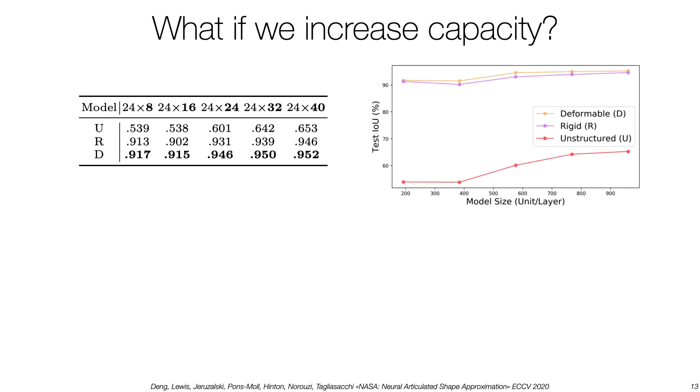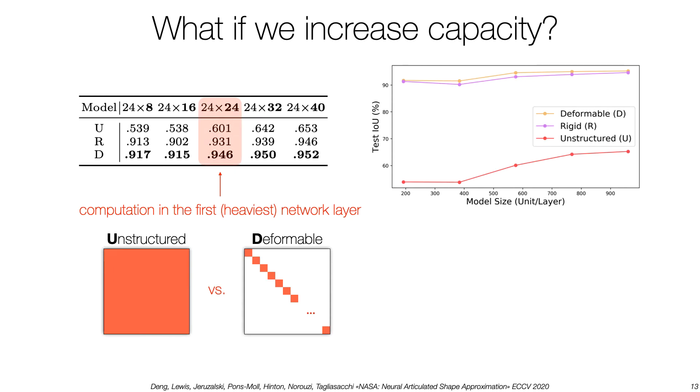We start by studying the performance of the baselines regarding neural capacity. Notice that the unstructured model struggles across the entire range, and its performance quickly saturates as the model size decreases. We also analyze the inference performance of different baselines. The bar surface areas visualize the number of neural connections of unstructured versus structured architectures. This results in significant improvement in inference time.